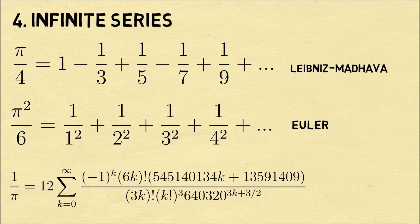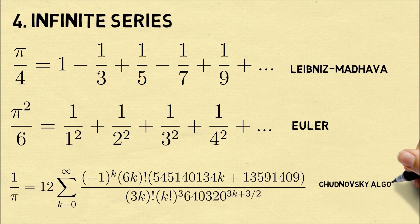There are also many complicated infinite series. This is one similar to one that the Indian mathematician Ramanujan would have come up with. And these types of formulas are used in the Chudnovsky algorithm, which is how pi is determined algorithmically on computers.